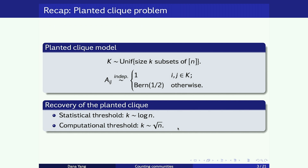When K is larger than a constant multiple of log N, you can run exhaustive search across all size-K subsets to find the clique. The computational threshold sits at a place exponentially larger than the statistical threshold. So you need much stronger signal strength if you're only given polynomial time computational power. When K is larger than a constant multiple of square root N, you can use a simple degree counting algorithm to recover the members of the clique.